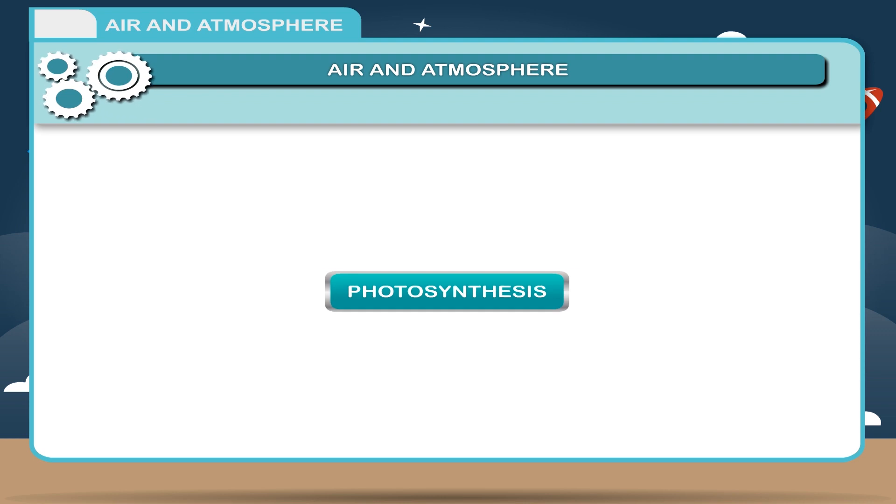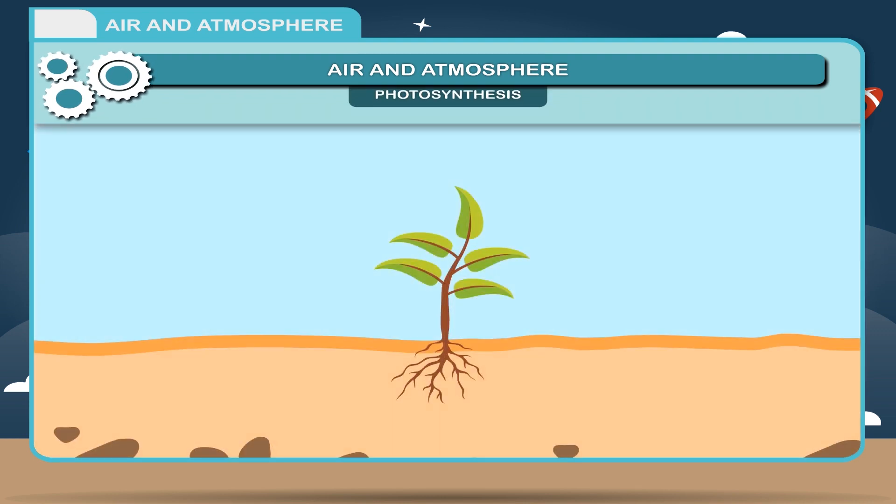Photosynthesis. Green plants manufacture food by the process of photosynthesis. Plants use sunlight to prepare their food.